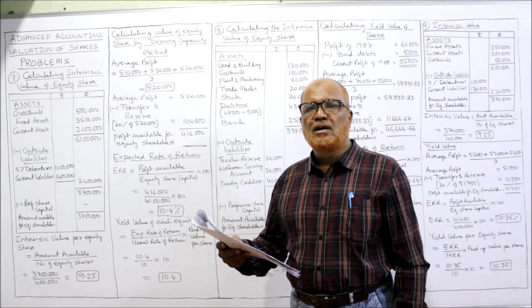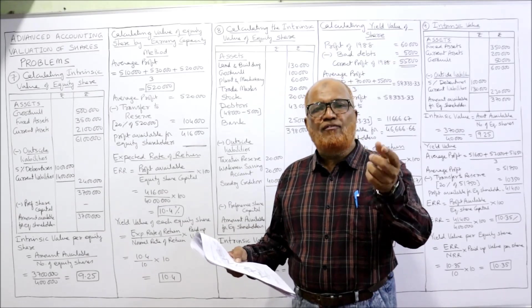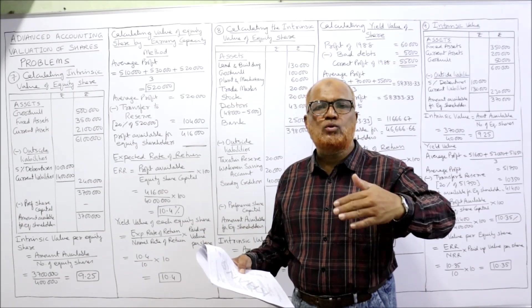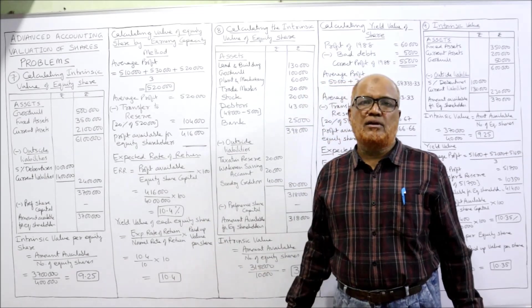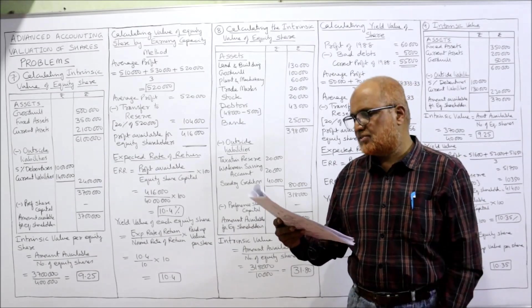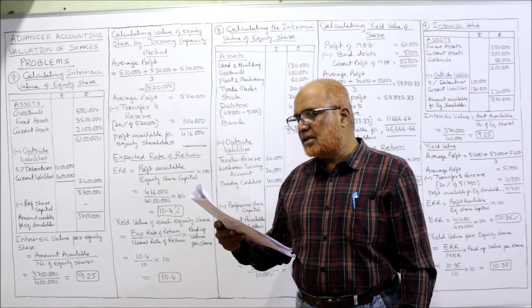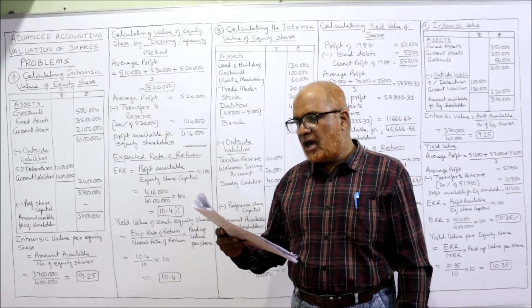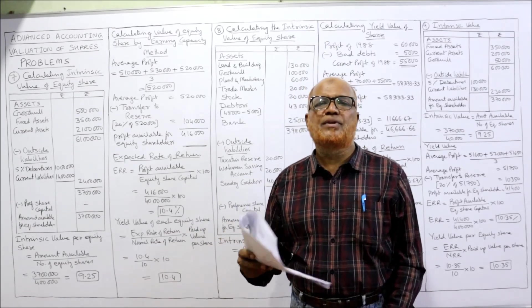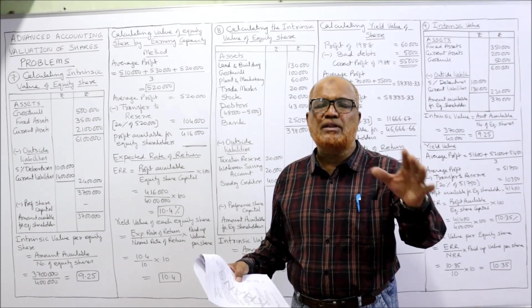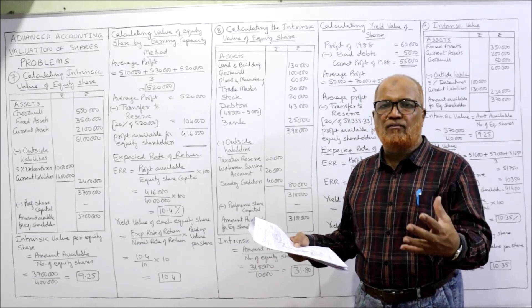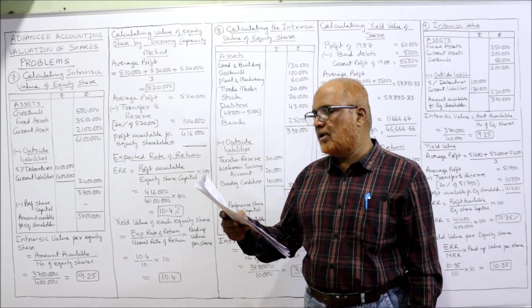Profits are given for the last 3 years. We take the average profit. From the average profit, 20% every year we are transferring to reserve — it's the policy of the company. So we will transfer 20% of that average profit to reserves, this proportion being considered reasonable in the industry in which the company is engaged.